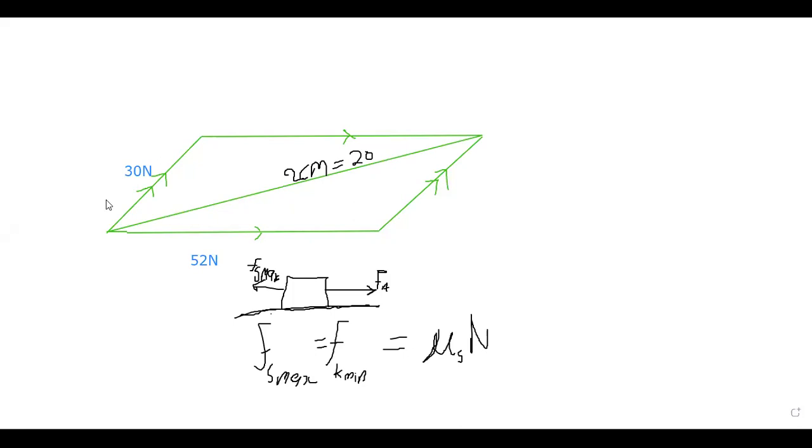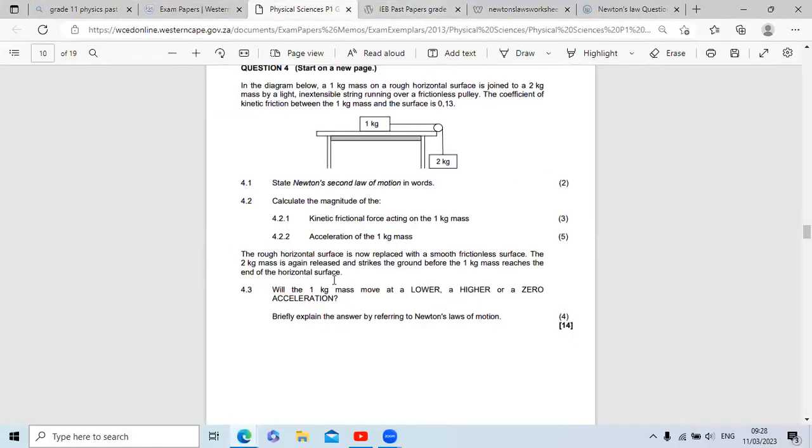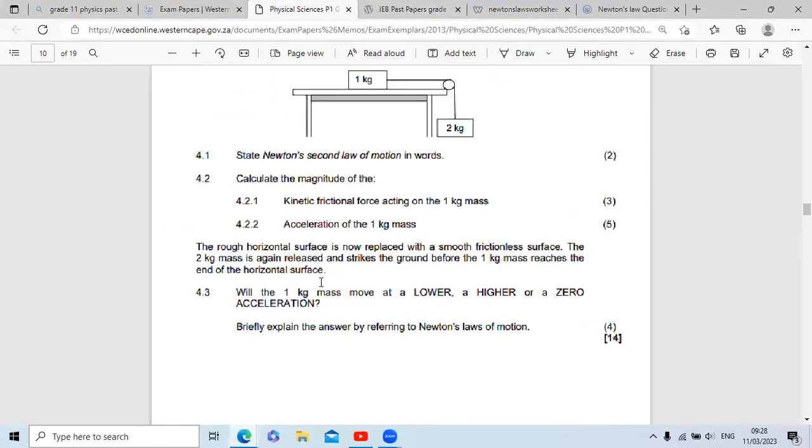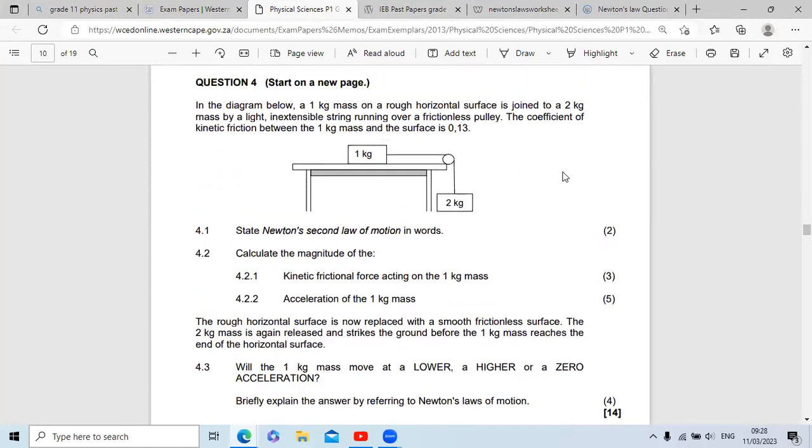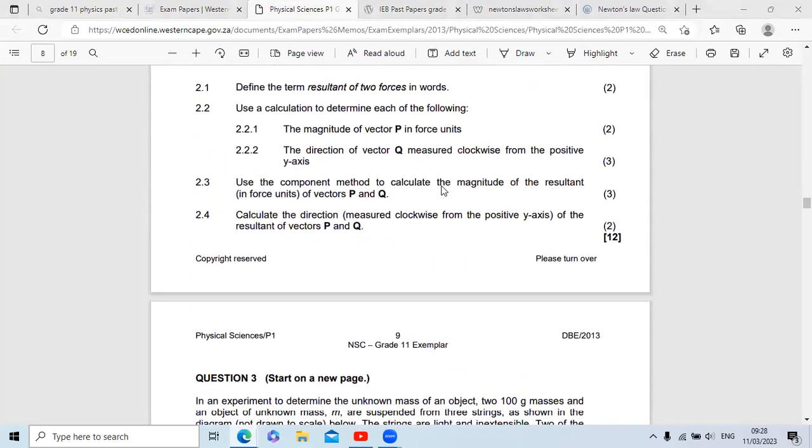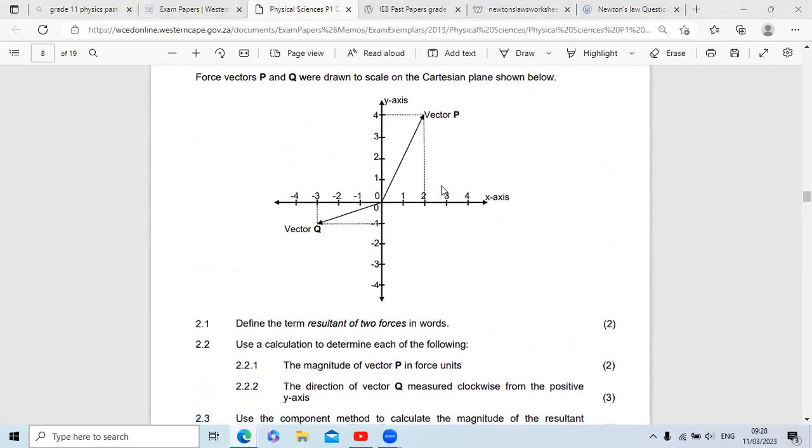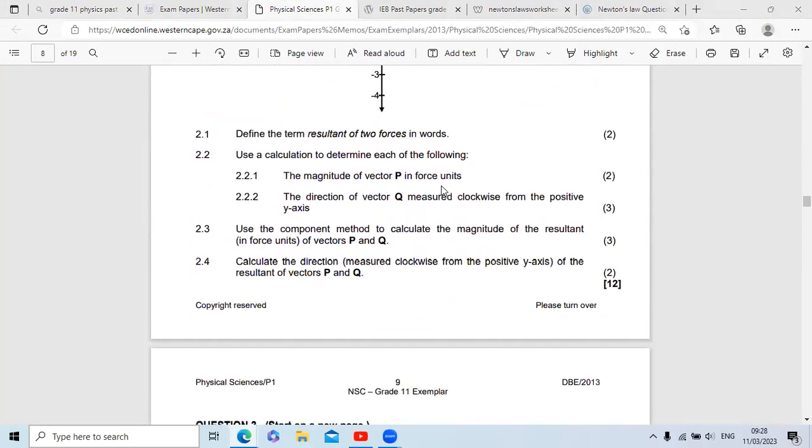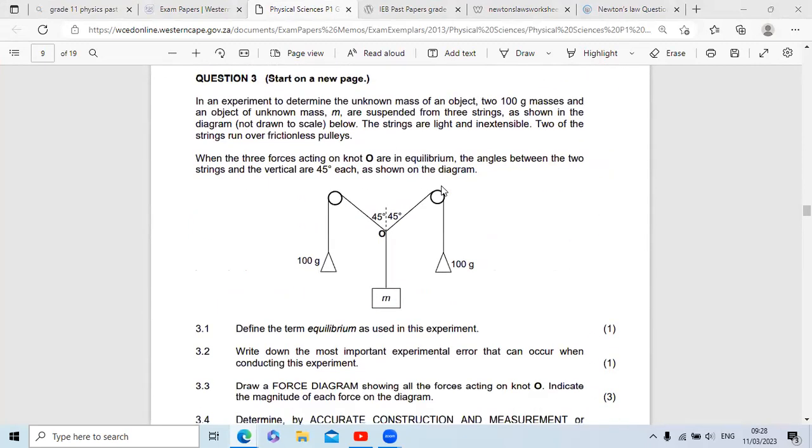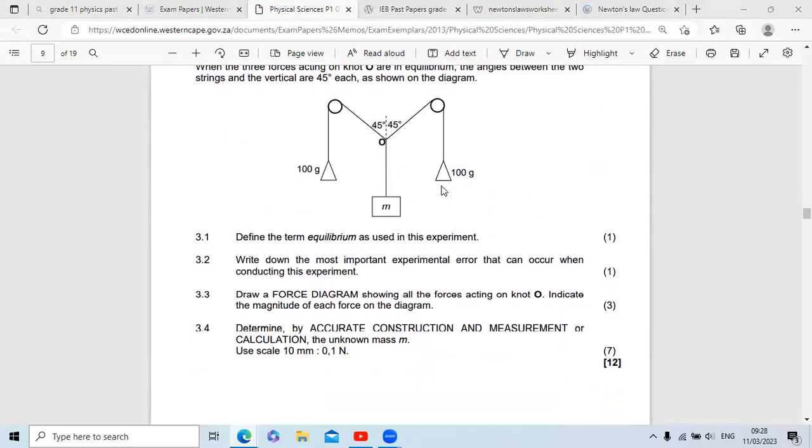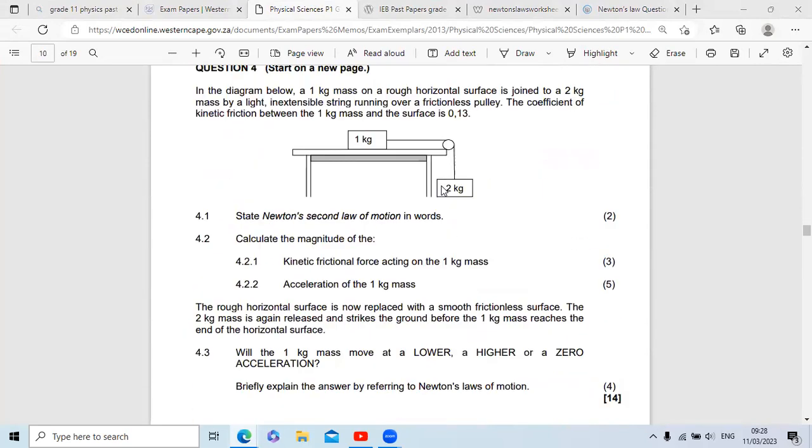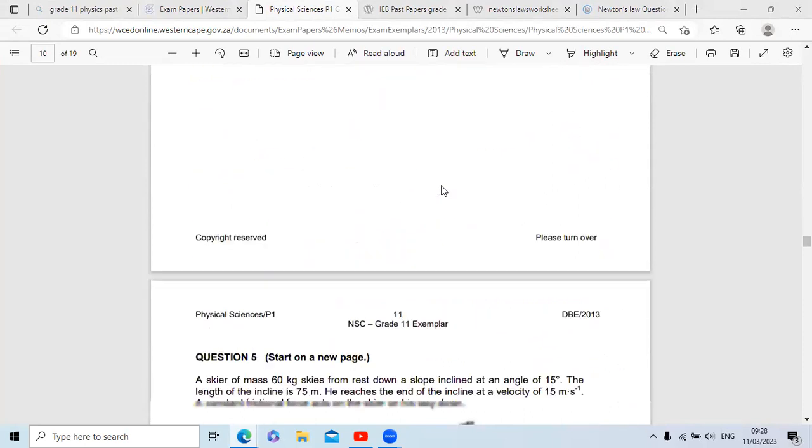We can go through something else for the moment and then we'll go through that. This is basically what we're gonna go through for today. We have question two which is like vectors, question three which is a mixture of your vectors and Newton's law, and question four which is Newton's law.